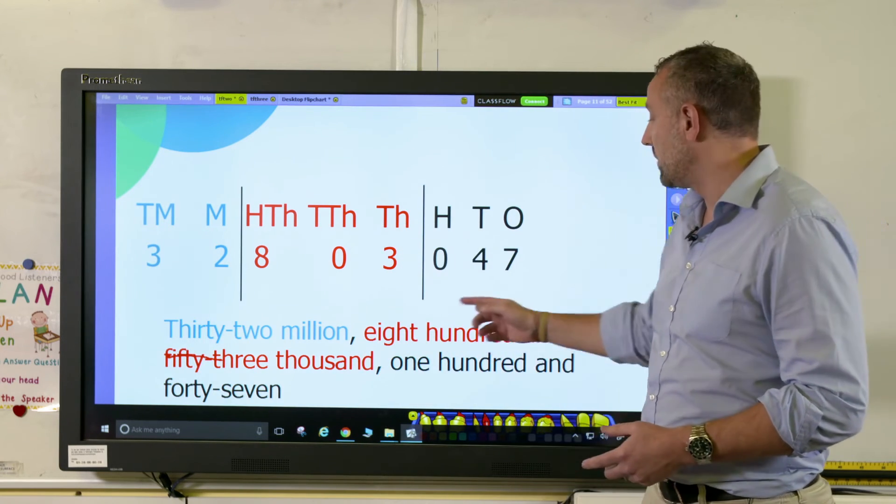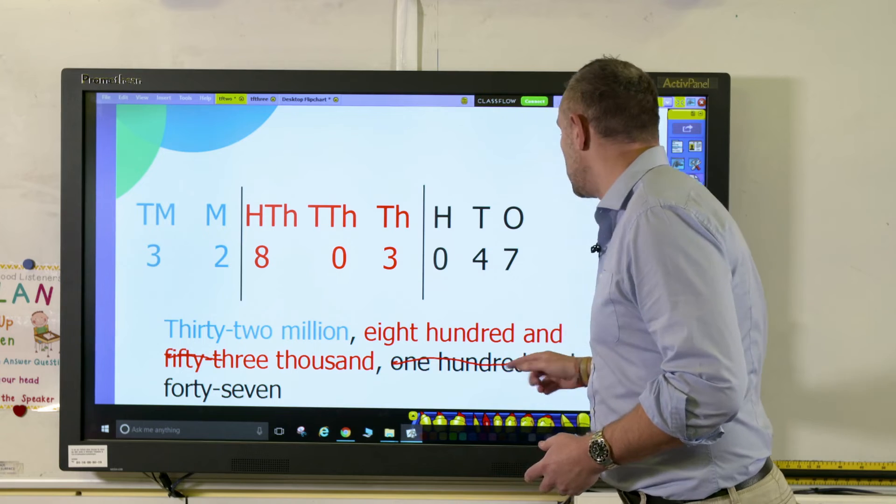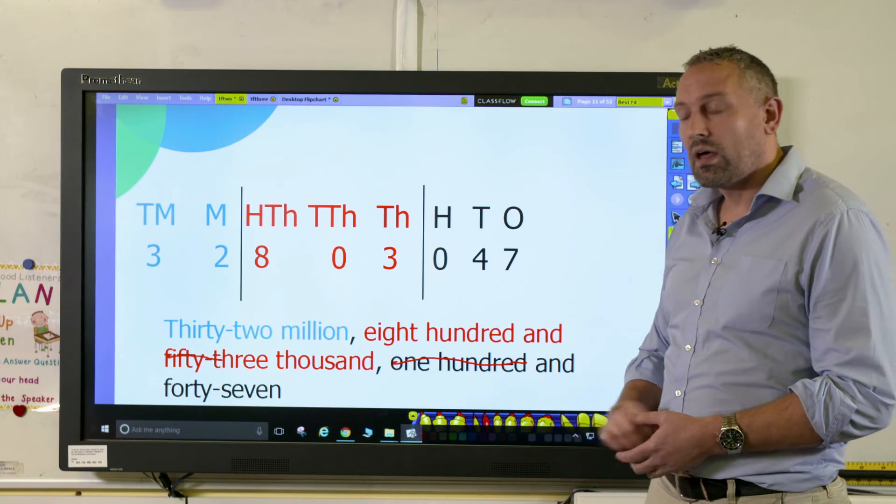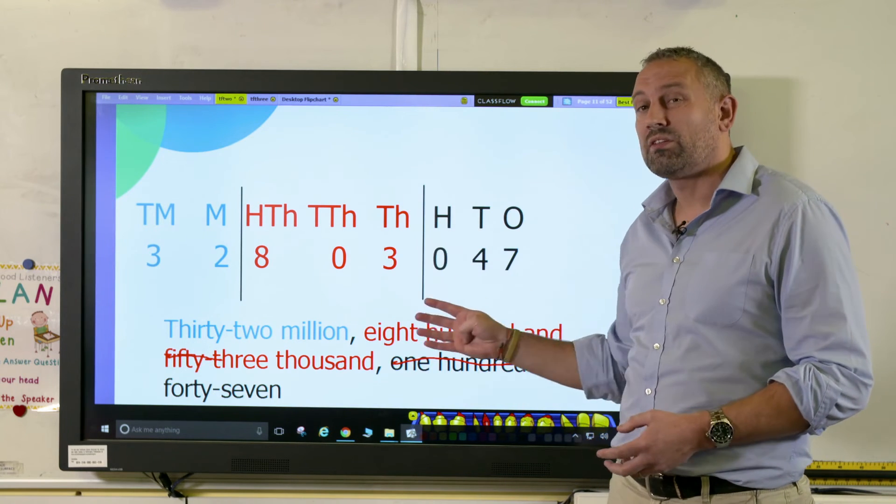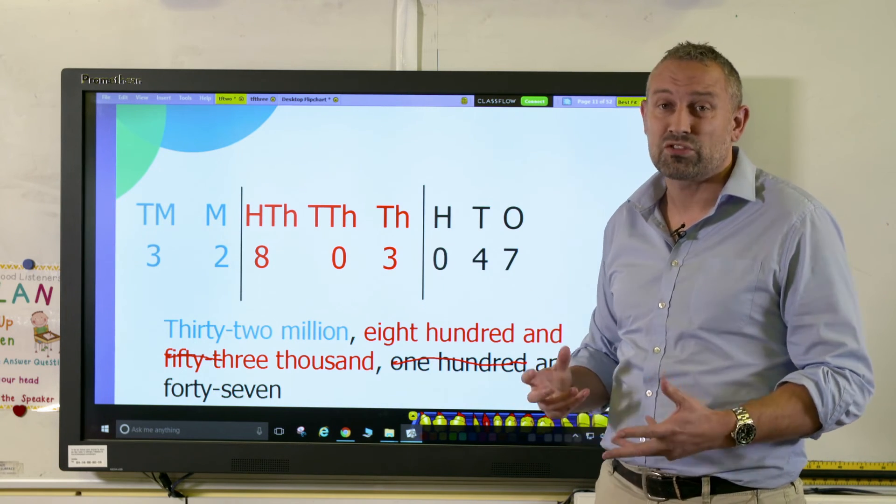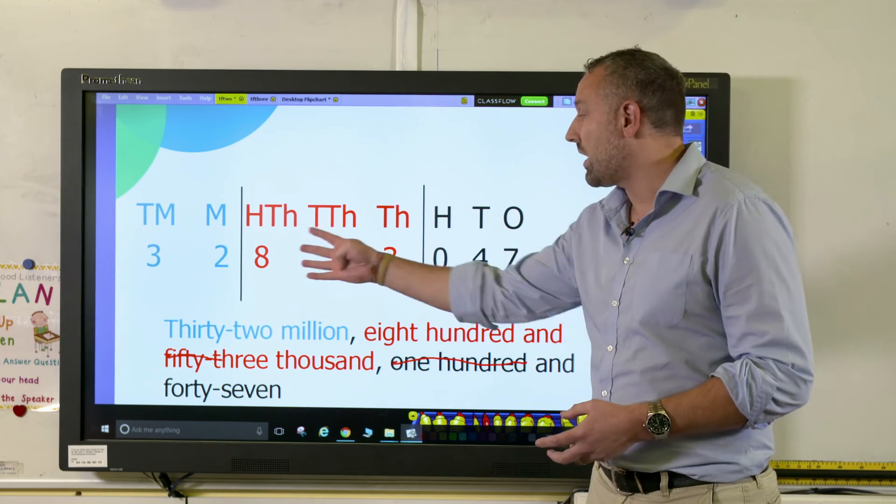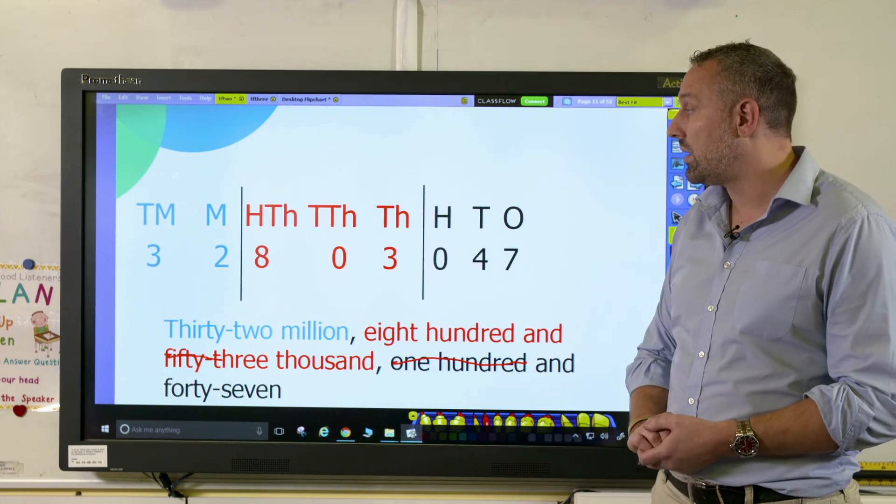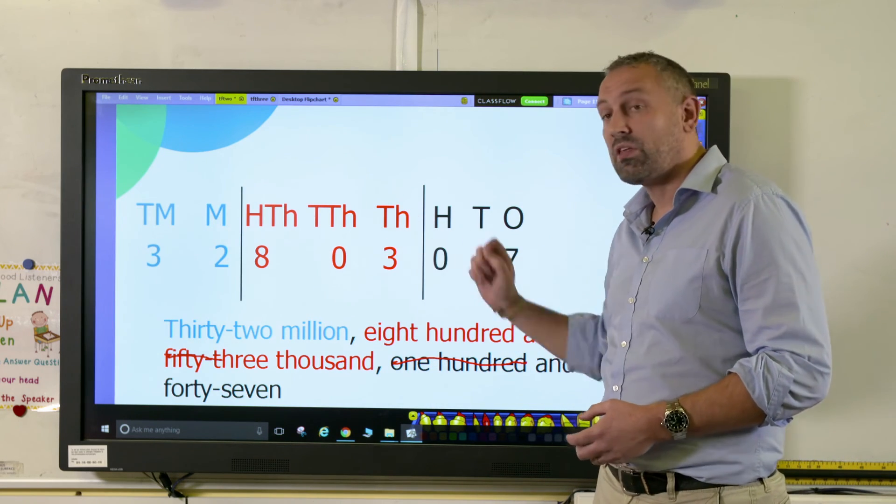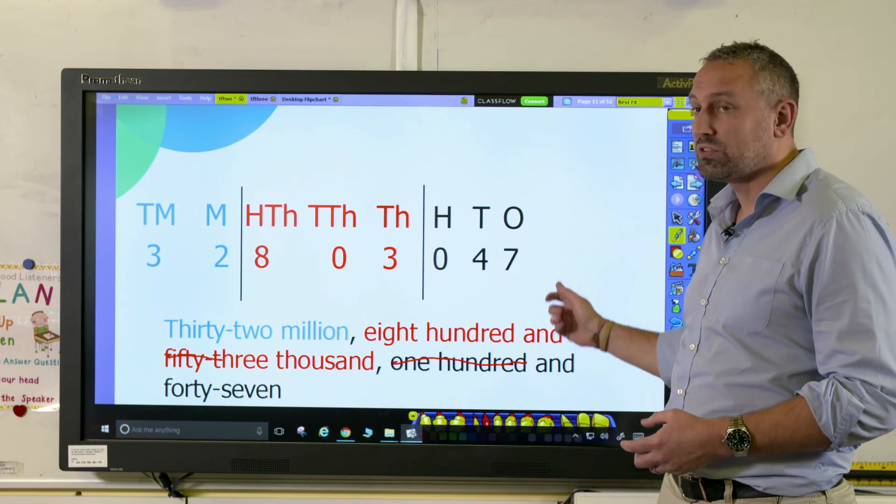And again, having the place value columns like this is really useful for children who may struggle when there are zeros. So now our number reads 32,803,047.